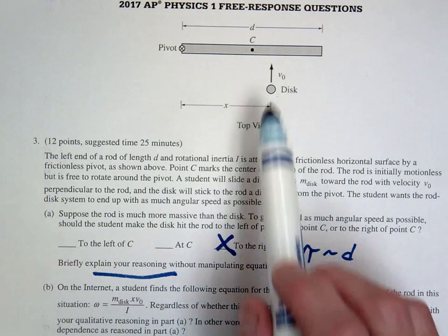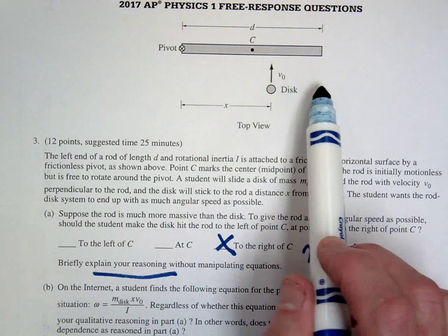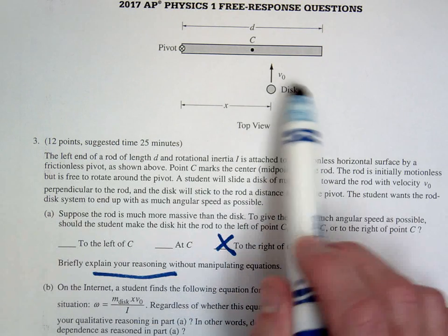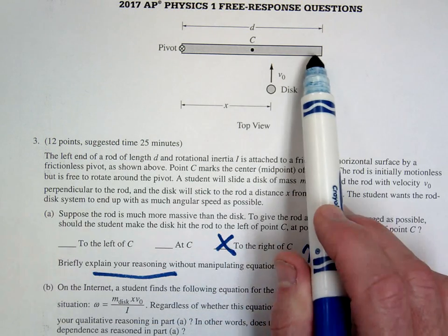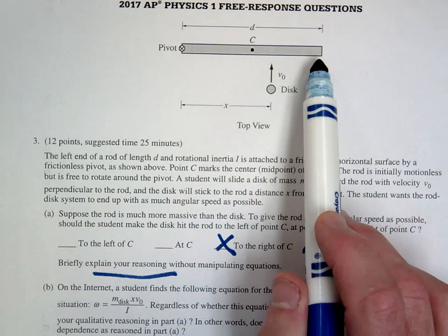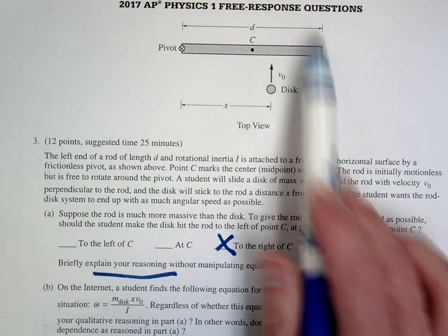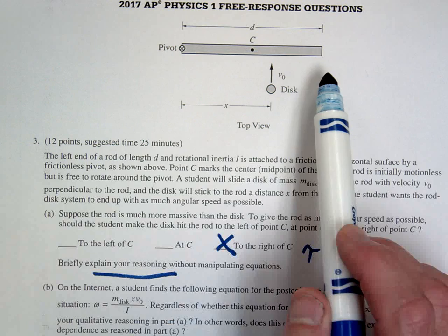The other thing you could talk about is, the farther you are from this, the greater initial angular momentum the disk has with respect to the pivot. And therefore, if it has more momentum to start with, it should have more momentum to end with.